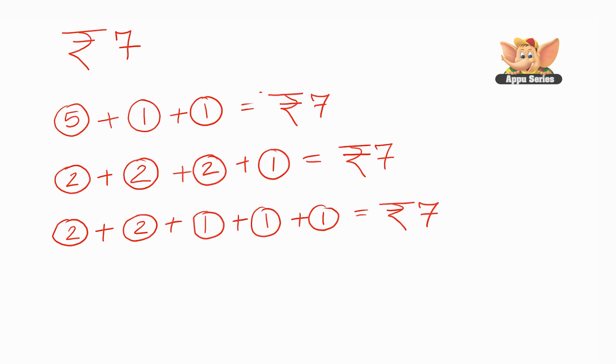And now, another combination would be 1 two rupee coin, plus 1 more rupee coin, plus another 1 rupee coin, plus another 1 rupee coin. So we have 2, 3, 4, 5. Another 1 rupee coin, 6. One more 1 rupee coin makes it 7.